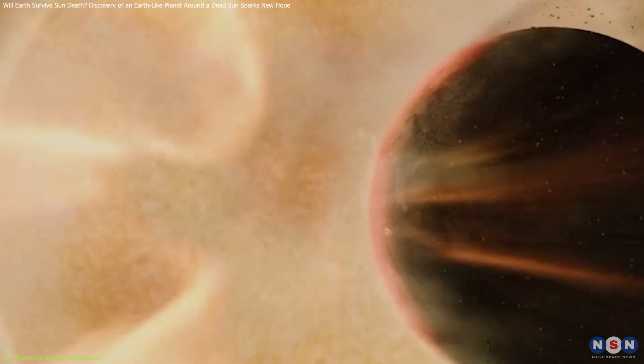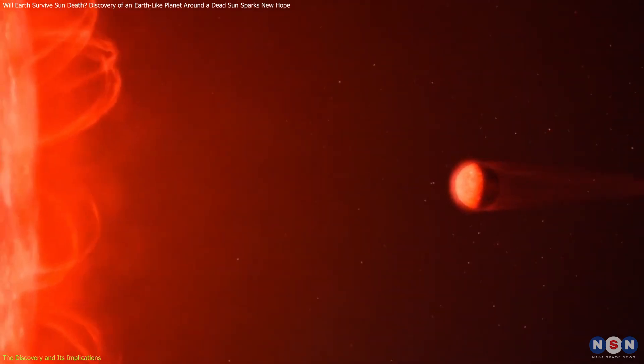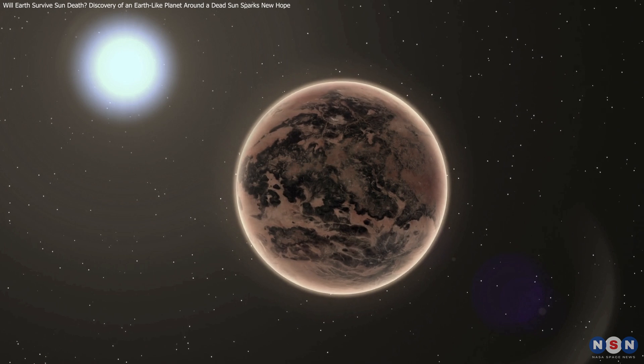In this system, the Earth-like planet endured intense heating, radiation, and a close encounter with destruction as its host star expanded, ultimately settling into a much colder orbit around the white dwarf.